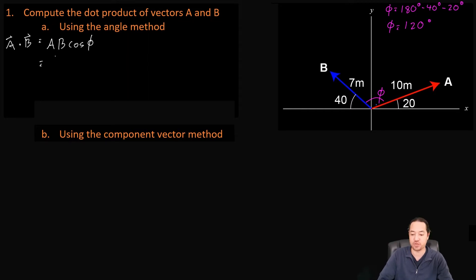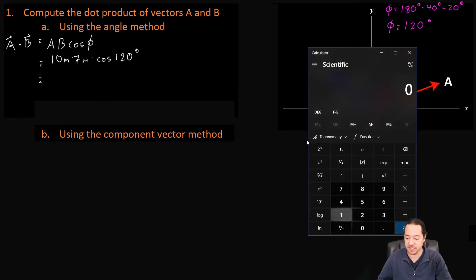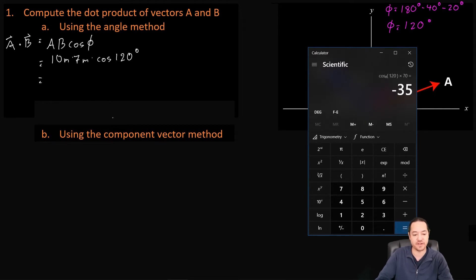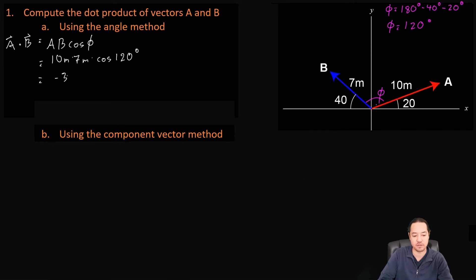Now we can calculate the dot product. This is going to be equal to A, which is 10 meters, times B, which is 7 meters, times the cosine of 120 degrees. Let's bring out our calculator: cosine of 120 degrees, and we're going to multiply this by 70. And so we get an answer of negative 35 meters squared.